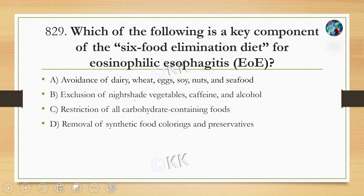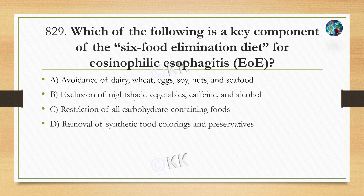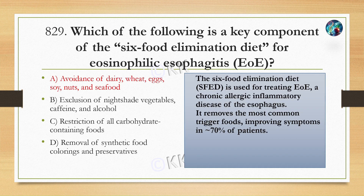Next question: which of the following is a key component of the six food elimination diet for eosinophilic esophagitis? Option A: avoid dairy, wheat, egg, soy, nuts and seafood. Option B: exclusion of nightshade vegetables, caffeine and alcohol. Option C: restriction of all carbohydrate-containing foods. Option D: removal of synthetic food coloring and preservatives. The correct option is A — avoidance of dairy, wheat, egg, soy, nuts and seafood.